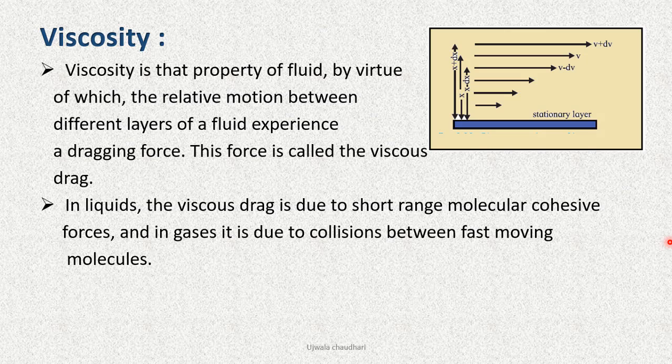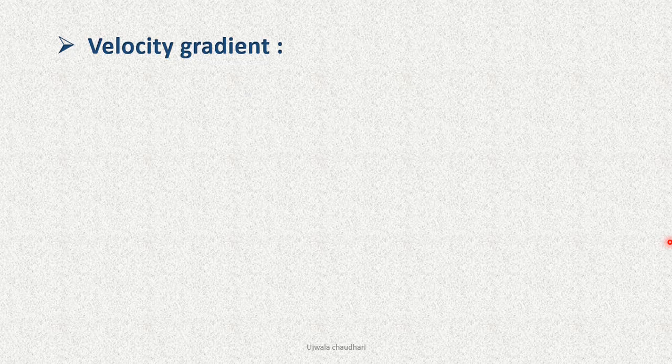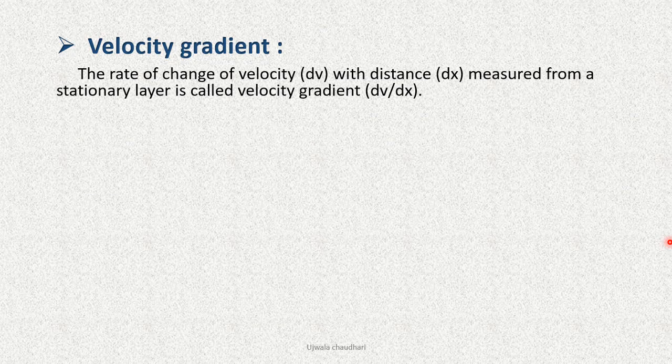This causes velocity gradient. The rate of change of velocity with distance measured from the stationary layer is called velocity gradient.